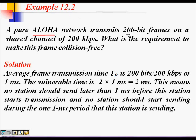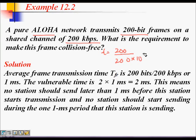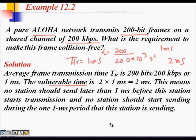For a concrete example: a Pure ALOHA network transmits 200-bit frames on a shared channel of 200 kbps. The frame transmission time Tfr is 200 bits divided by 200×10^3 bits per second, which equals 1 millisecond. The vulnerable time is therefore 2 × 1 ms = 2 milliseconds. No other station should begin transmitting within 1 millisecond before or during our transmission.